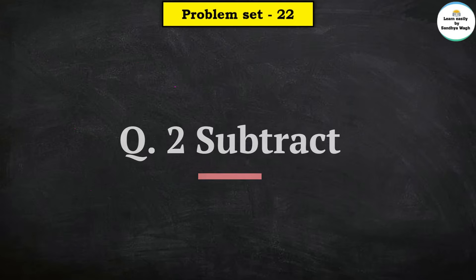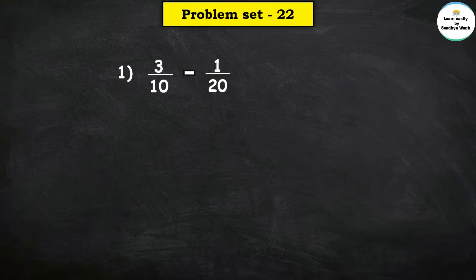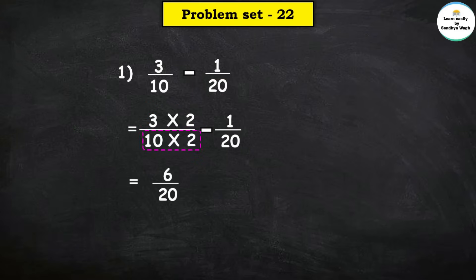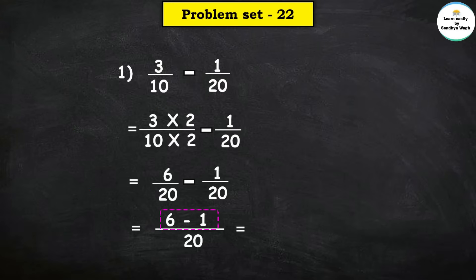Now for subtraction. Question: 3 upon 10 minus 1 upon 20. Denominators are 10 and 20 — these are unlike fractions. Convert to like fractions. 10 table: 10, 20 — so 10 times 2 = 20. For 3 upon 10: multiply denominator 10 by 2 to get 20, and numerator 3 by 2 as well. Minus 1 upon 20 — as it is, since current denominator is already 20. So: 3 times 2 = 6, 10 times 2 = 20. Minus 1 upon 20.